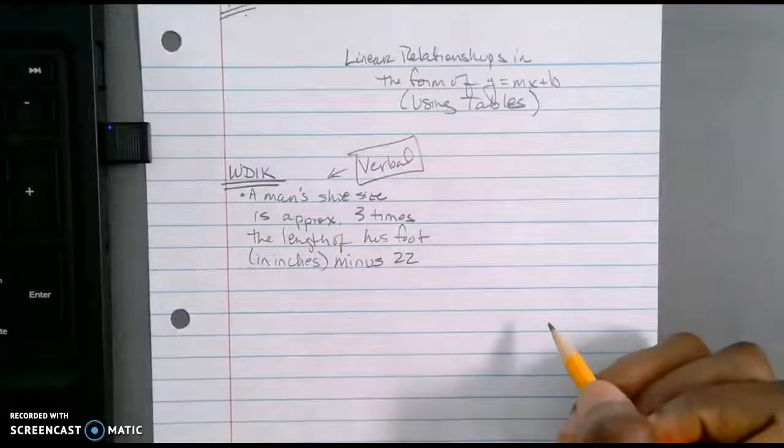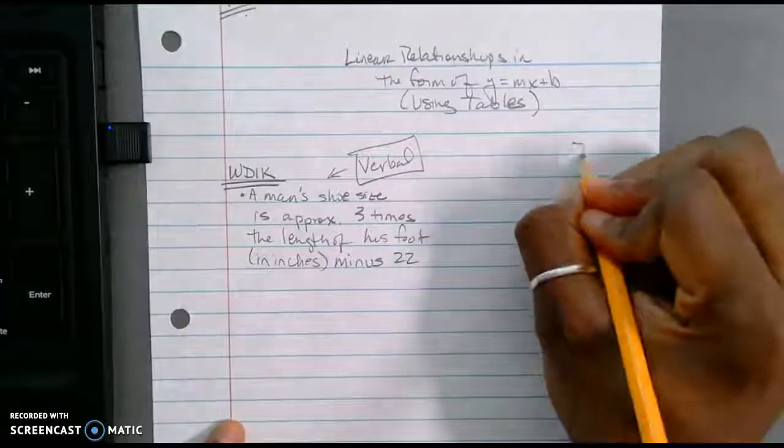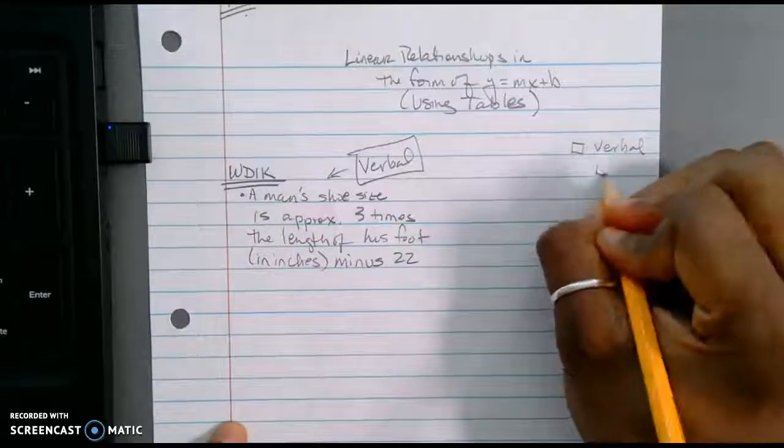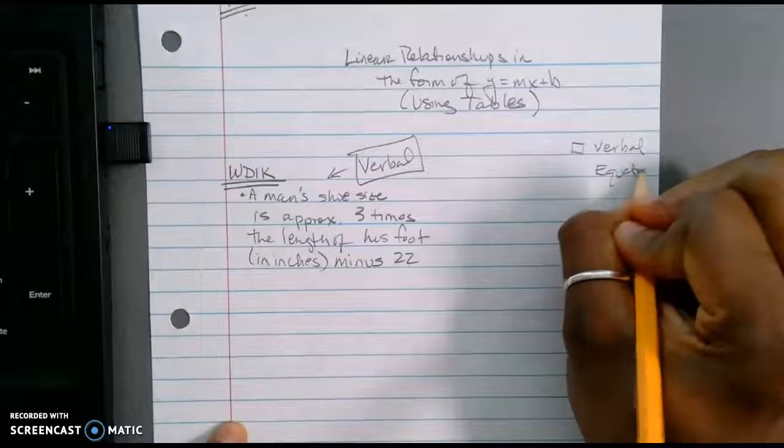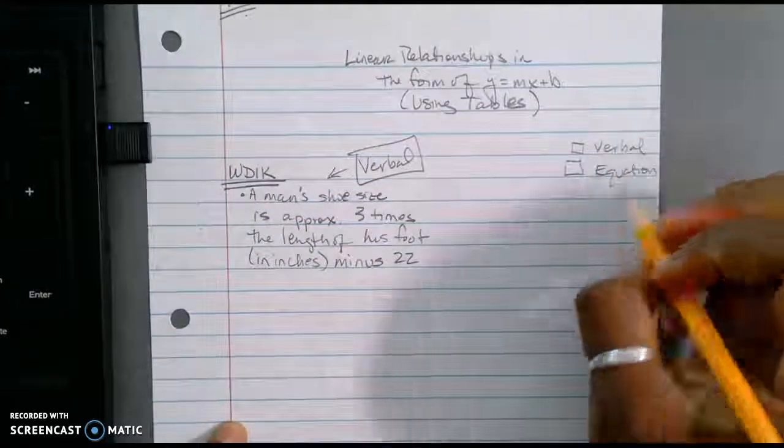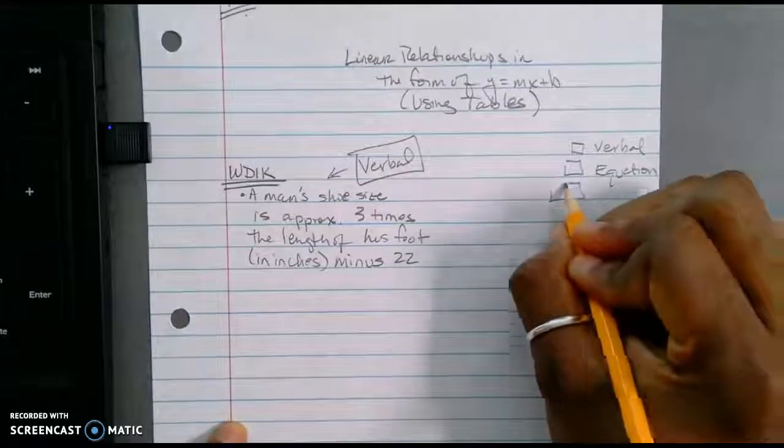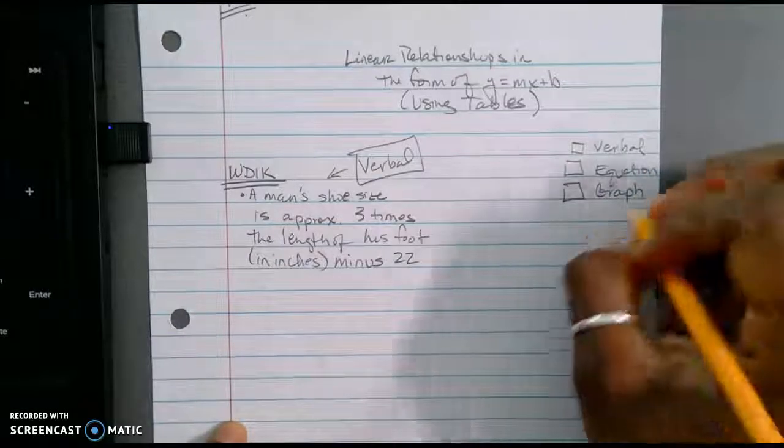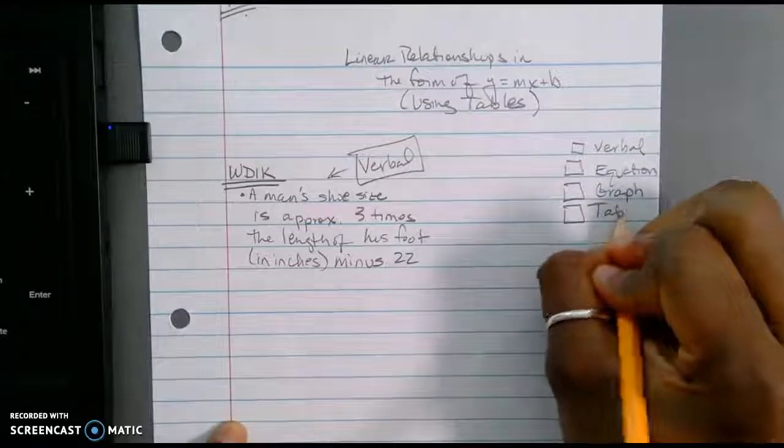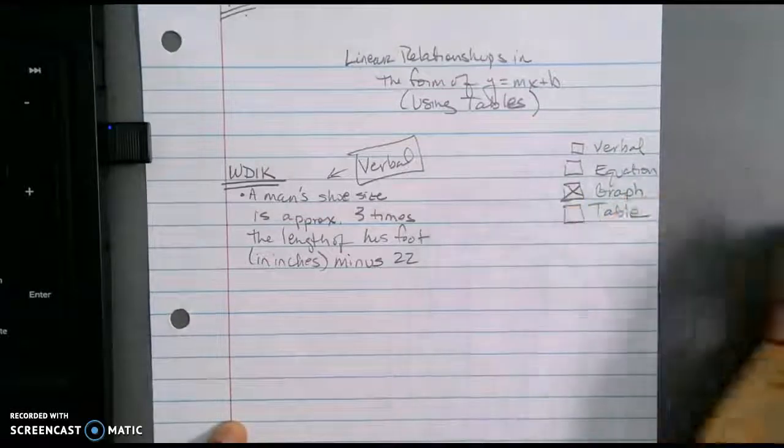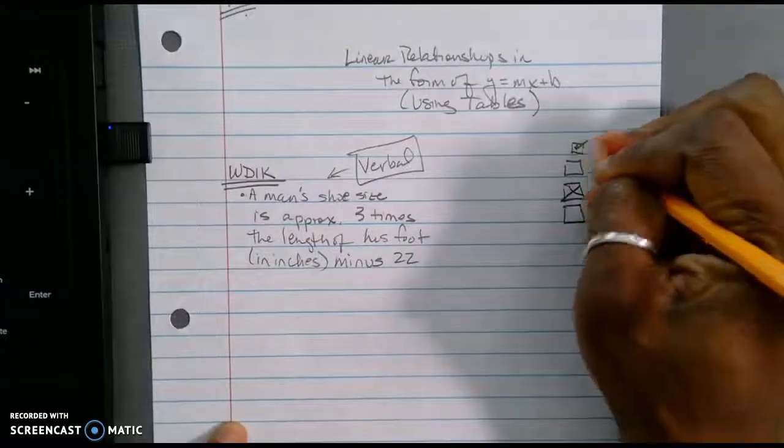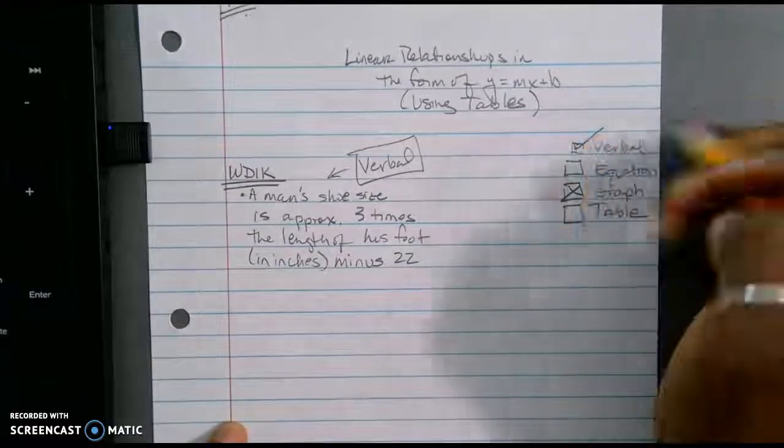Now that's one of the multiple representations. So if I were to do a check mark here: verbal, equation, graph, and table. And I know that I'm not going to be doing graph this time, but I've already written it, or it came to us in verbal.